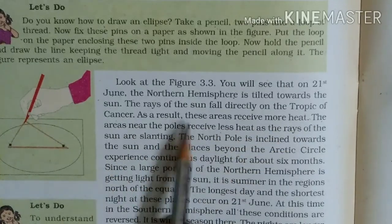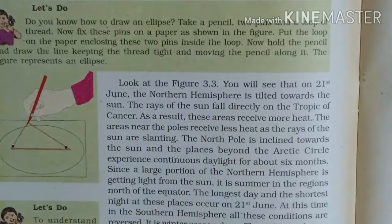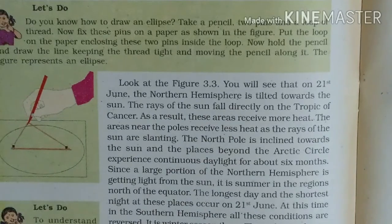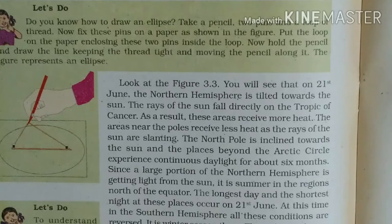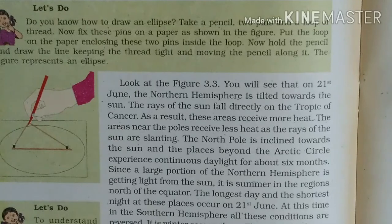It is being explained that on 21st June, the northern hemisphere — the north side of the Earth — tilts towards the sun. The sun's rays fall directly on the Tropic of Cancer. So what is the result? It is that it will receive much heat.